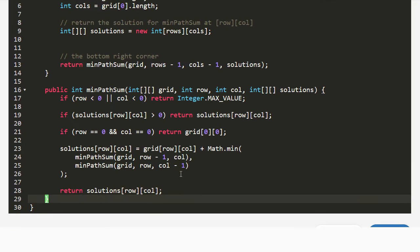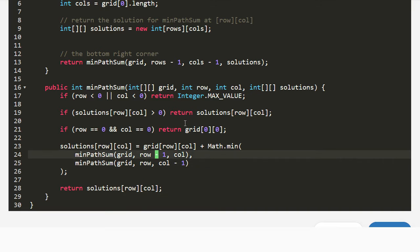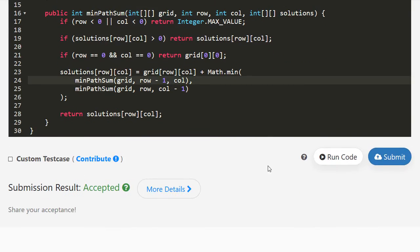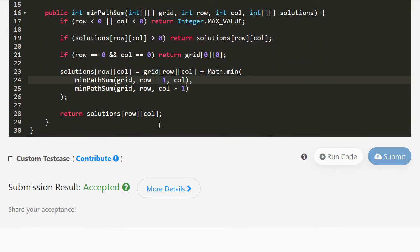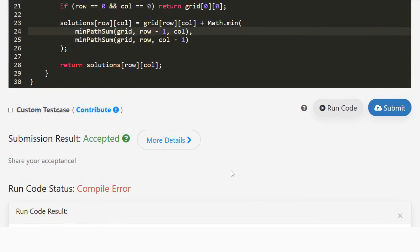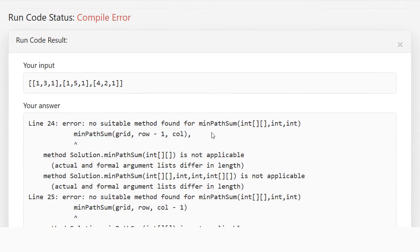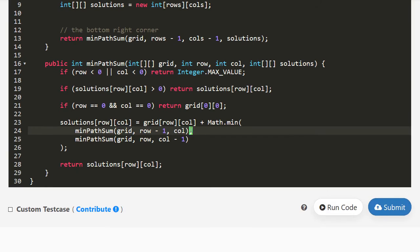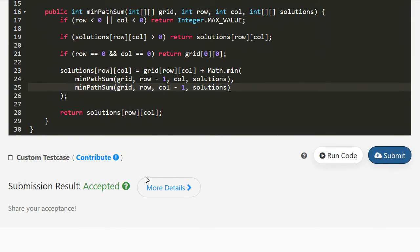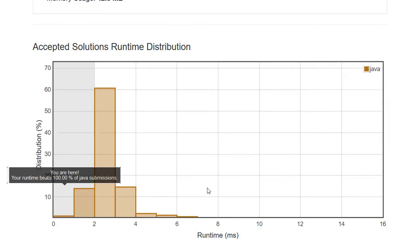So we'll do that. And then finally, we will return solutions at row and column instead. Okay, so that should help save us a little bit of time. So we'll try running this code. And oh, right. So here, we have to remember to keep passing it on. And that should be it. Let's try submitting. Okay, so this is accepted. And I'll show you a different way to approach the same problem.